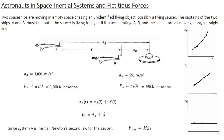He finds that the acceleration of the object is 1000 meters per second squared. Once you measure the acceleration, you can calculate the force acting on the object. The force F_A is A_A times M, where M is the mass of the object. So this force is 1000 M Newtons. This is what spaceship A measures.